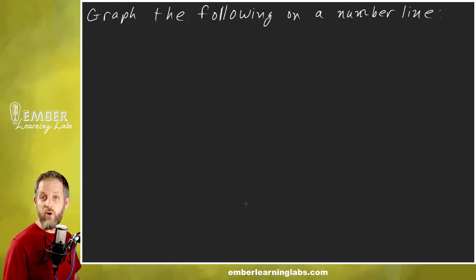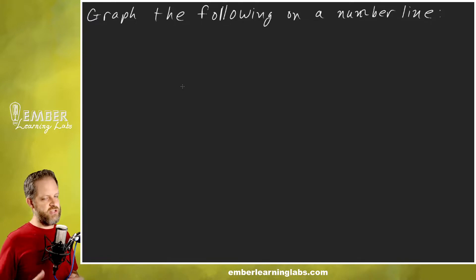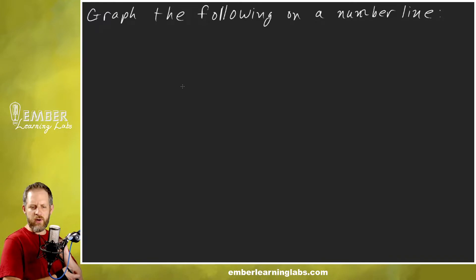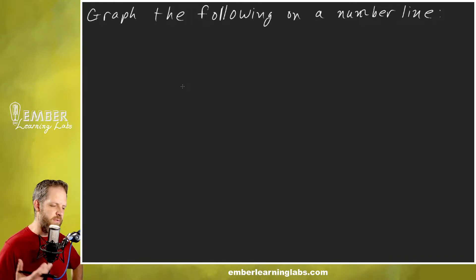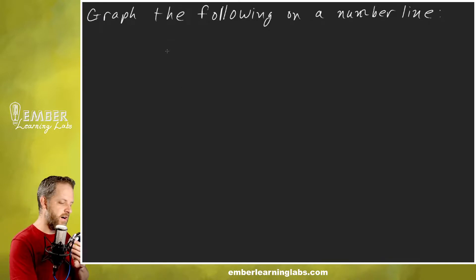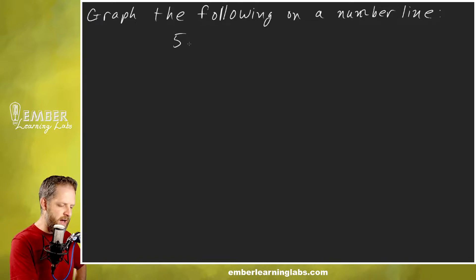Let's make a list of numbers we're going to graph. We're doing integers — not rational numbers; we'll talk about ordering rational numbers at a later date. For now we're just talking about the number line itself. The numbers are: 5, 2, negative 8, 6, and negative 1.